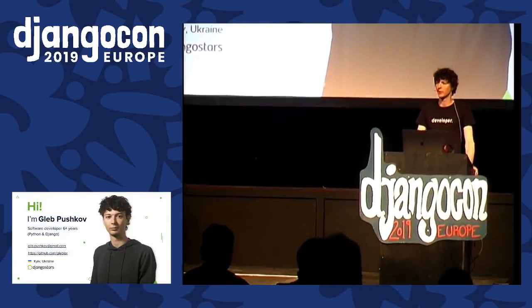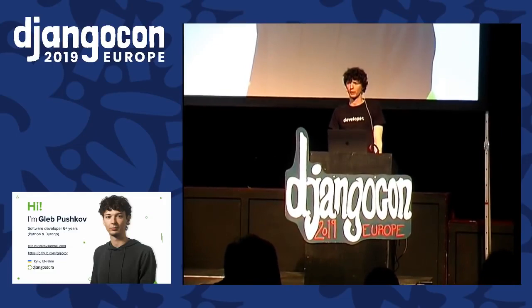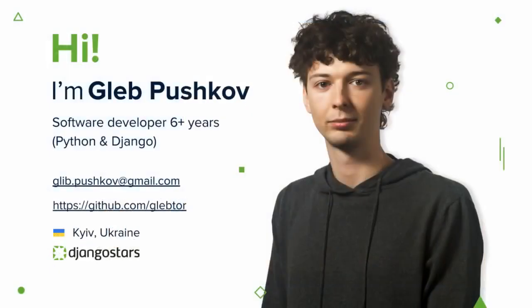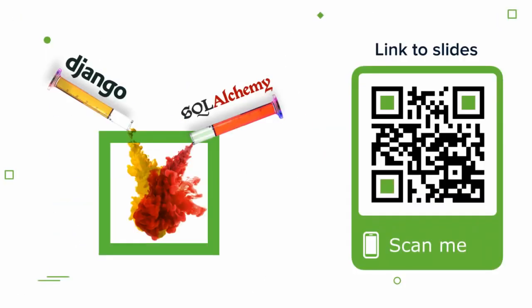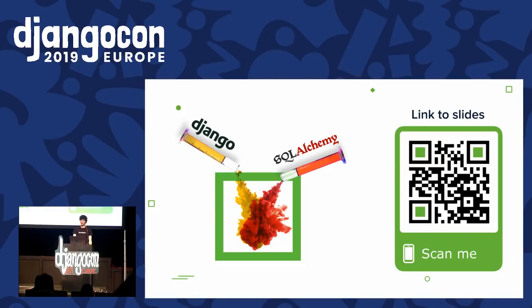Hello. My name is Gleb. I'm a software developer from Ukraine, Kyiv, working with Python and Django for more than six years, currently employed at Django Stars. Today I want to share a lot of information, so I have to be really fast to fit in the time. I hope we will have some time for questions, but I don't promise it.